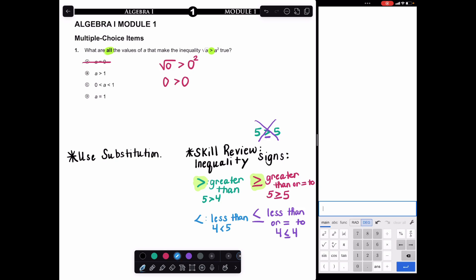We have option D when plugging one in, and we run into a similar situation. The square root of one is just one, and one squared is just one. Once again, not a true statement. One is not strictly greater than one. Right away we can eliminate those two specific quantities.